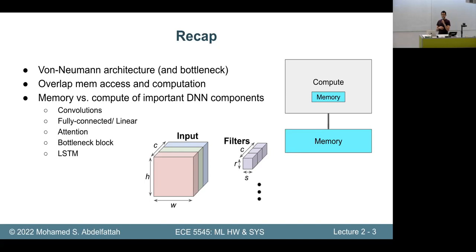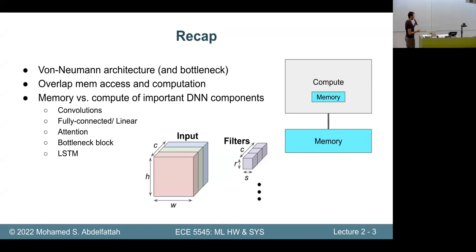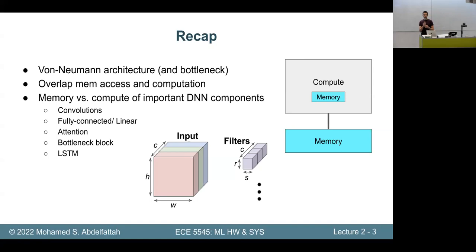We also looked at important neural network primitives from a computational view — specifically the memory versus computation requirements of components like convolutions, fully connected layers, attention mechanisms, bottleneck blocks, inverted bottleneck blocks, and LSTMs. The goal wasn't a comprehensive list, but to change our perspective: now if someone comes up with a new primitive, you can assess its parameter size, number of computations, and whether it's memory bound or compute bound.